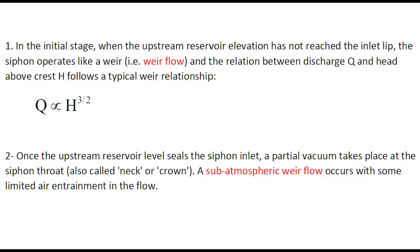In the initial stage, when the upstream reservoir level has not reached the inlet lip, the siphon operates like a weir. The relationship between discharge and head above crest follows a typical weir relationship, with the discharge being proportional to the head to the power of 1.5. As the upstream reservoir level seals the siphon inlet, a partial vacuum takes place at the siphon throat, and a sub-atmospheric weir flow occurs with some limited air entrainment in the flow.